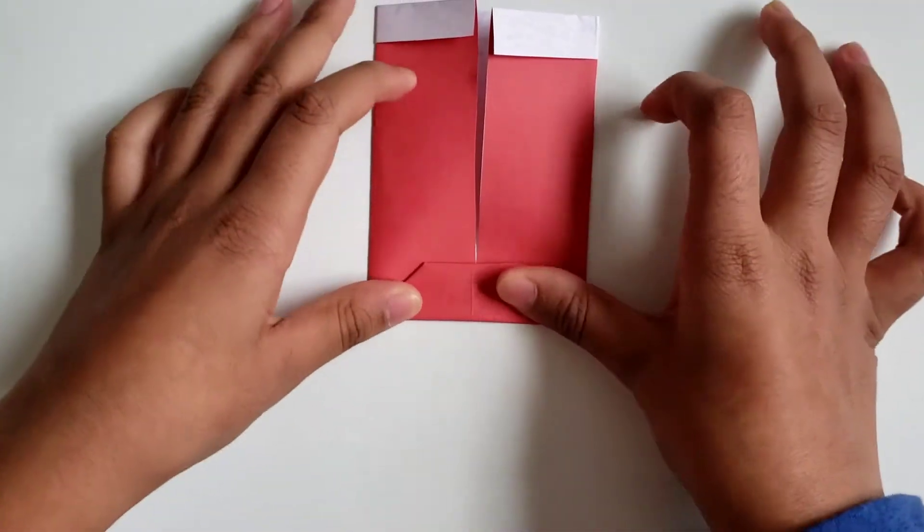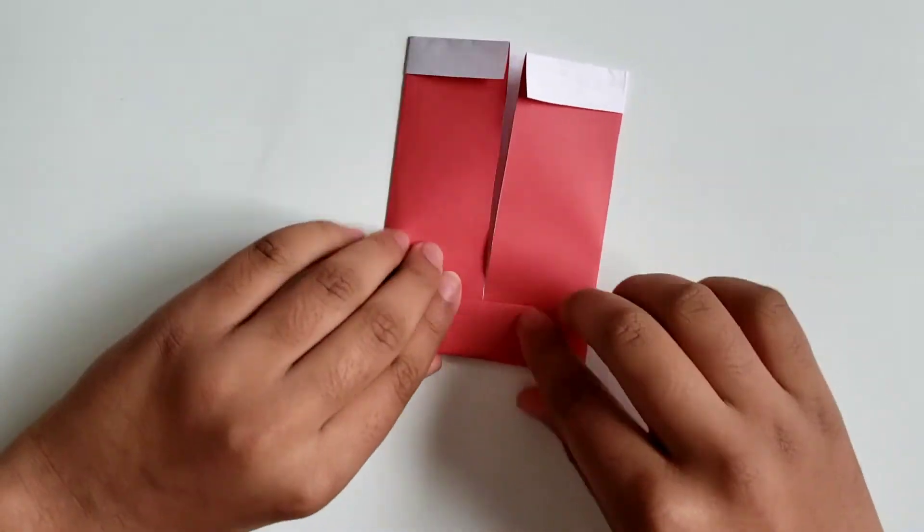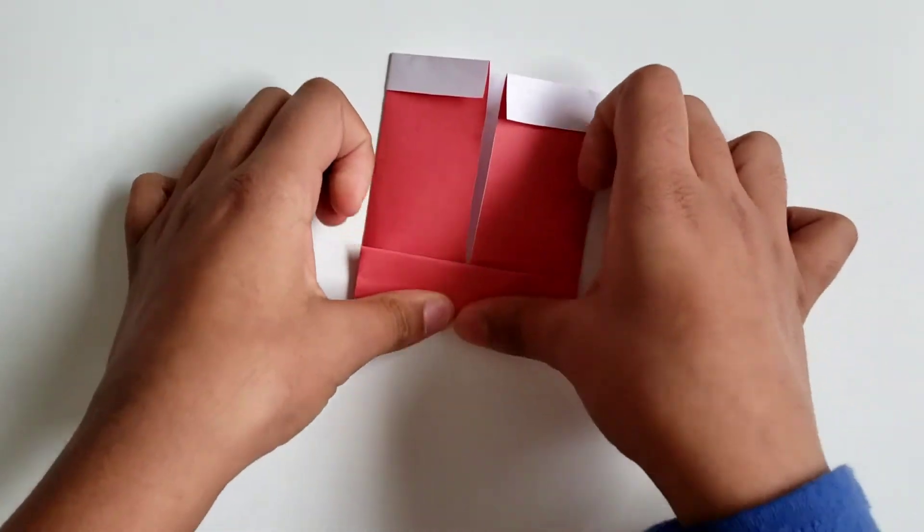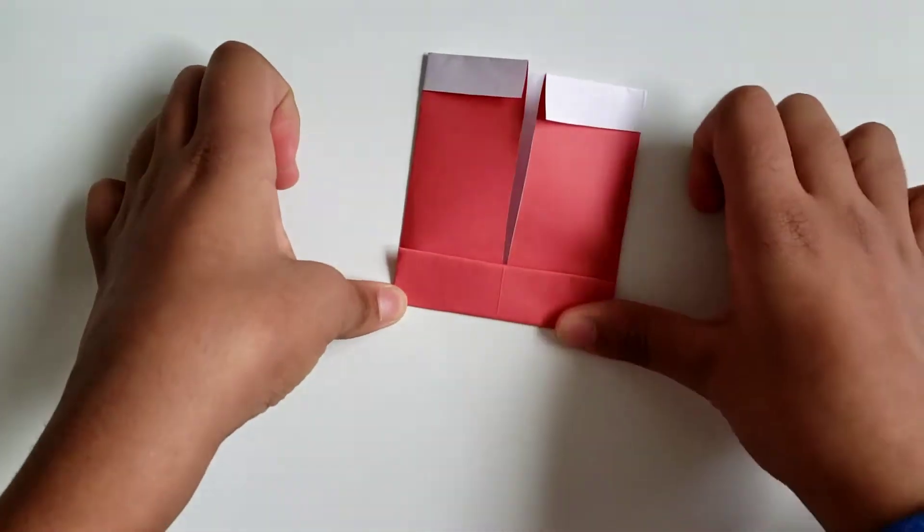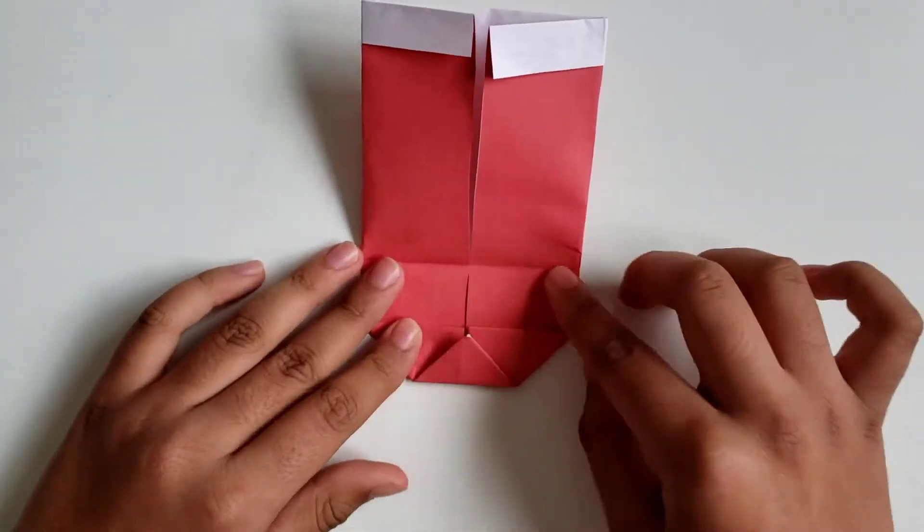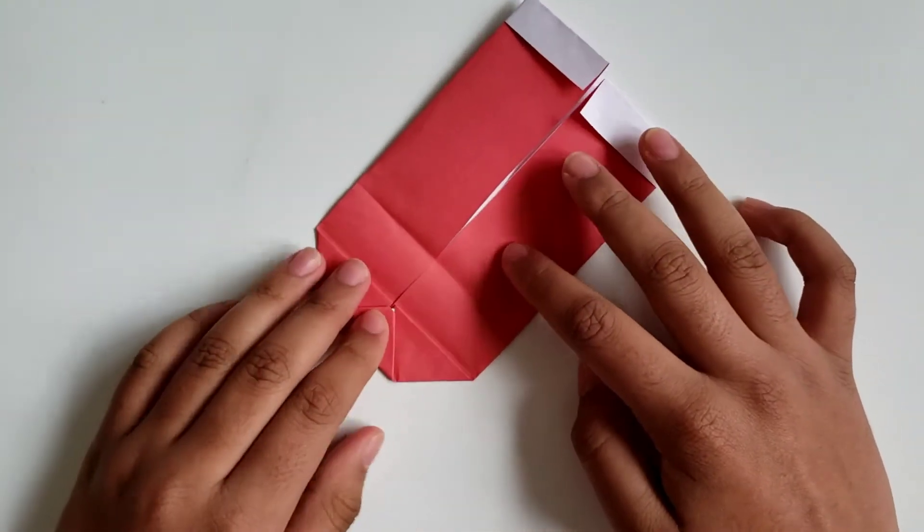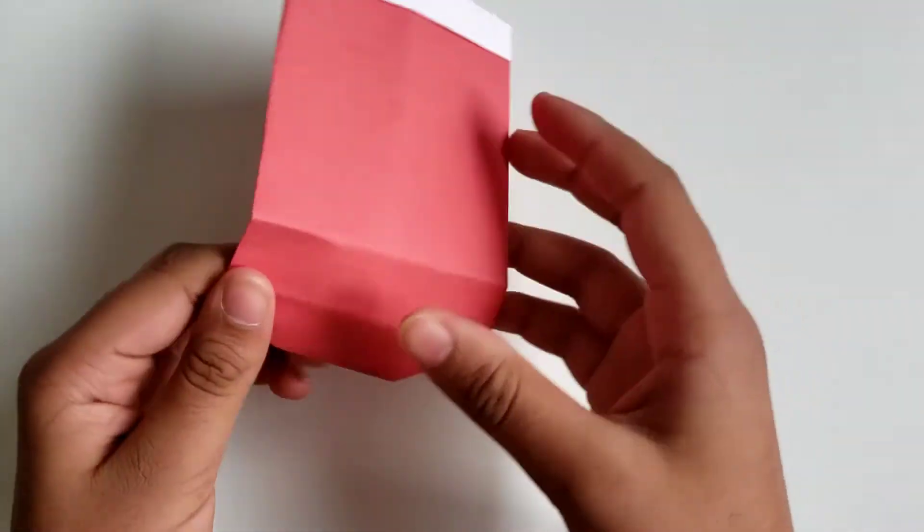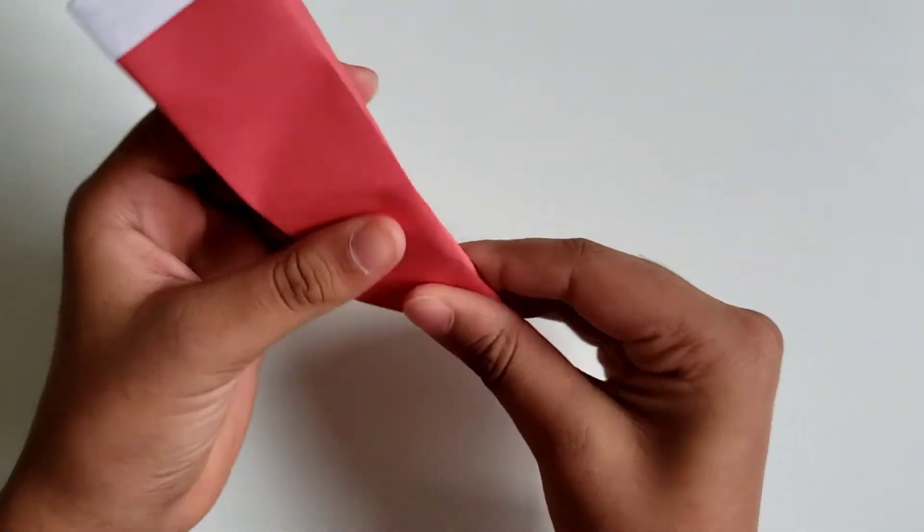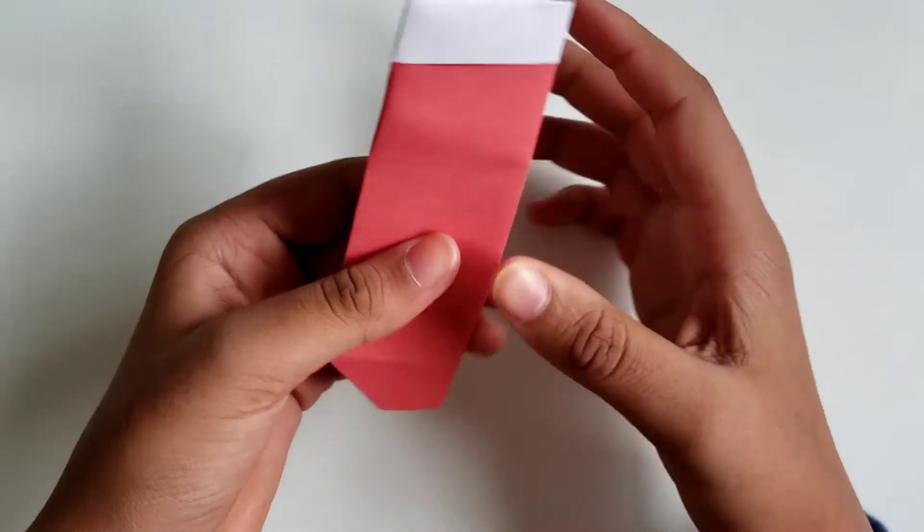So here we have a crease. Now we want to make the - if we fold this, we want to now make a stocking, the curve. So now what we're going to do, we're going to take this end and we're going to fold it right here like this.